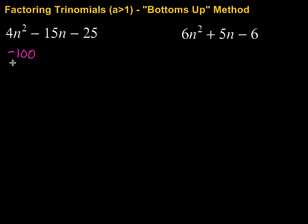So 4 times negative 25 gives me negative 100. Then I want factors of negative 100 that will combine to be negative 15. Let's see. How about negative 20 and 5? Combine those, that would give me negative 15. Then I put each of those over A. So over A, over A. A in this case is 4.